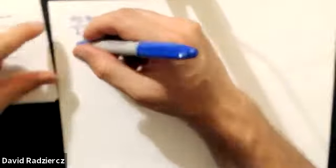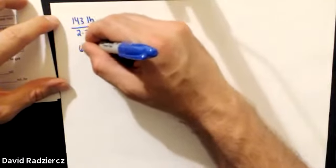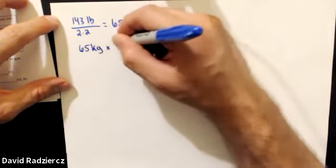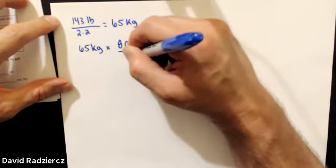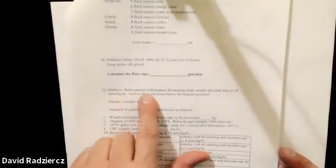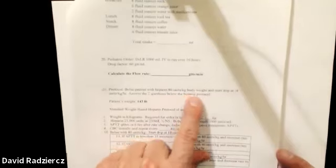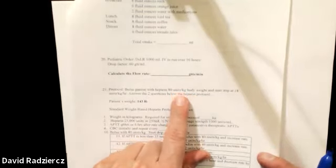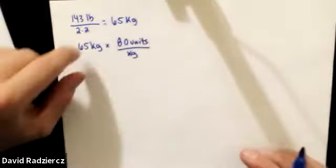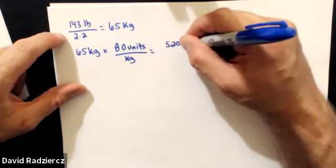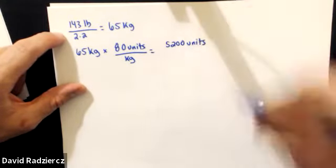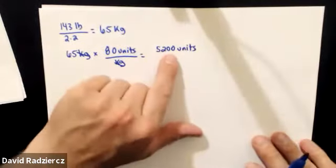The first question asks for the bolus in milliliters. Patient is 65 kilograms, multiply by 80 units per kilogram — because the protocol says bolus with heparin 80 units per kilogram. 65 times 80 gives 5,200 units. That's the bolus dose in units.